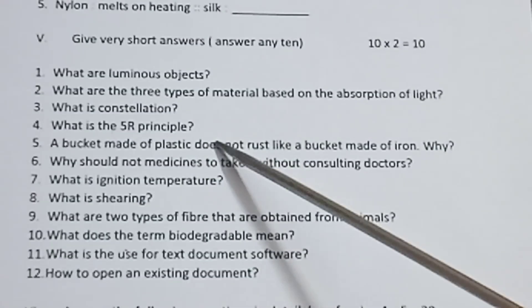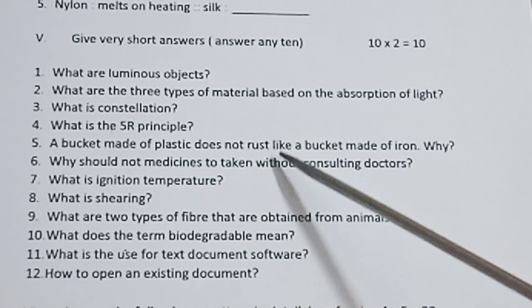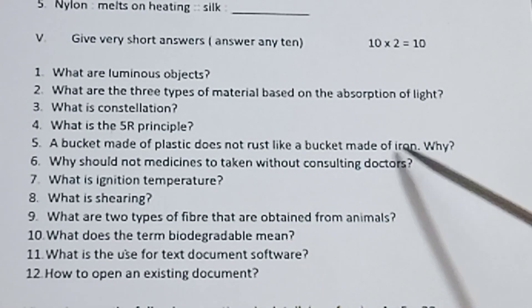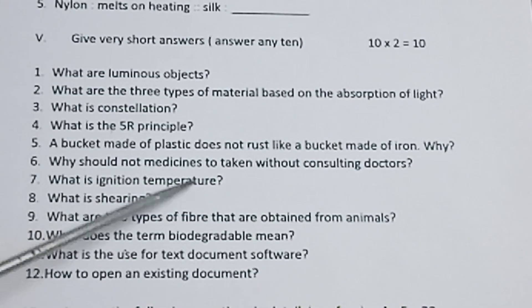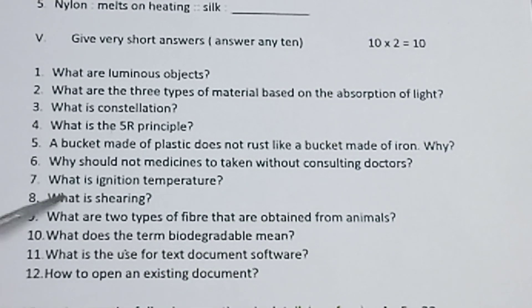Fourth one, what is the 5R principle? Fifth one, a bucket made up of plastic does not rust like a bucket made up of iron, why? Sixth one, why should not medicines be taken without consulting doctors? Seventh one, what is ignition temperature? Eighth one, what is shearing? Ninth one, what are two types of fiber that are obtained from animals?